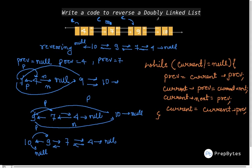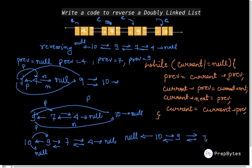Now prev becomes 9. Then current.prev = current.next: the next of 10 is null, so now the prev of 10 points to null. Then current.next = prev, so the next of 10 becomes 9. We update current = current.prev, and since that is null, our current is now null and the loop exits. The list has been successfully reversed.